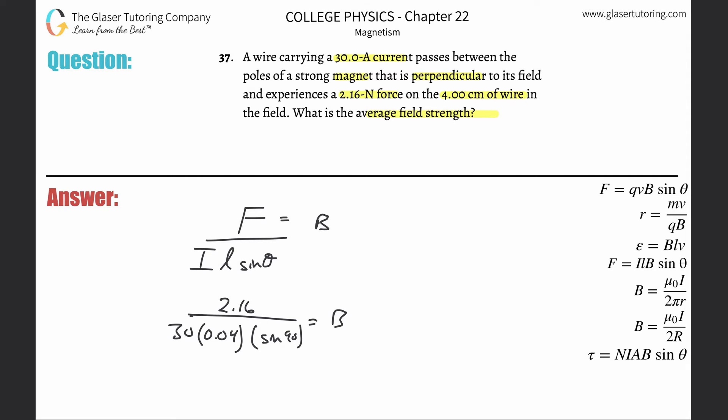Take out that calculator. 2.16 divided by parenthesis 30 times 0.04. And I did 30 minus 0.04—when we rush, we all make silly mistakes. So, 2.16 divided by 30 times 0.04 gives us 1.08, and the units for magnetic field are Tesla.